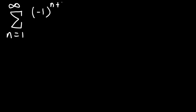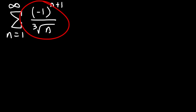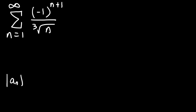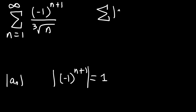Now let's say we have (−1)^(n+1) divided by the cube root of n. Go ahead and determine if the series is absolutely convergent, conditionally convergent, or divergent. We need to determine the absolute value of a_n. Since (−1)^(n+1) varies between −1 and +1, its absolute value equals 1. So the absolute value of the series is 1 divided by the cube root of n.